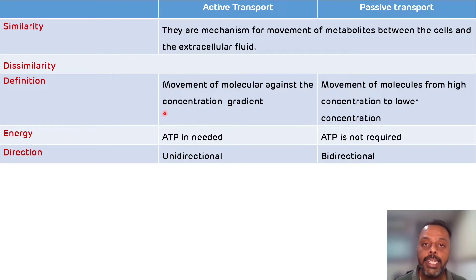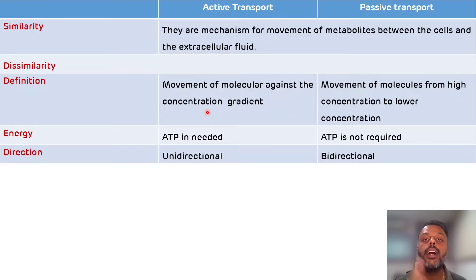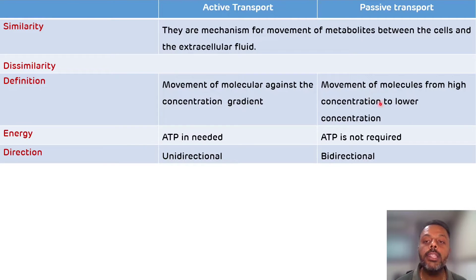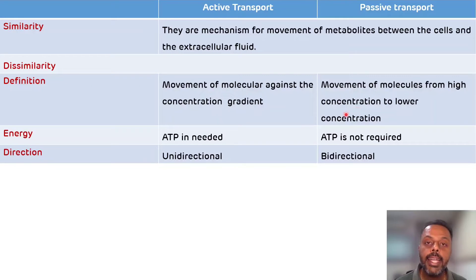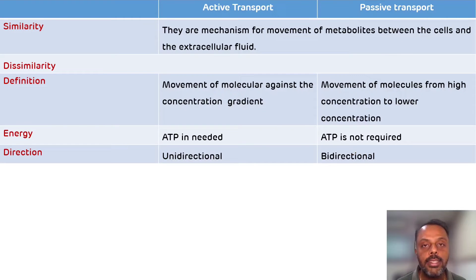As active transport is against the concentration gradient, it occurs uphill, while passive transport occurs downhill. The direction of active transport is unidirectional, while passive transport is bidirectional.